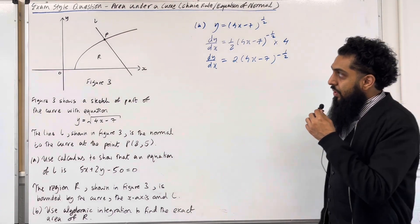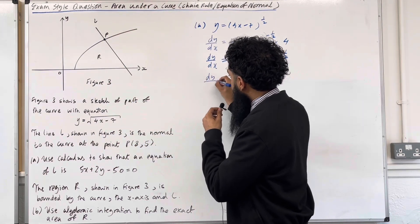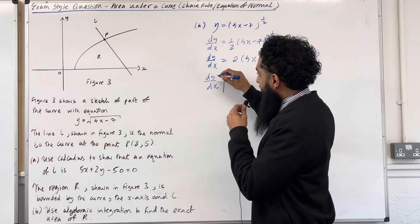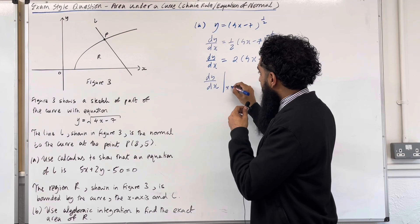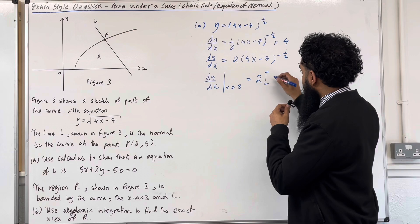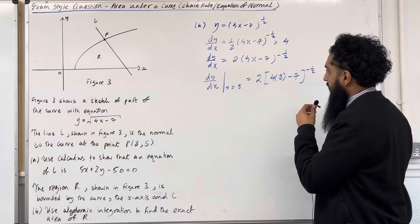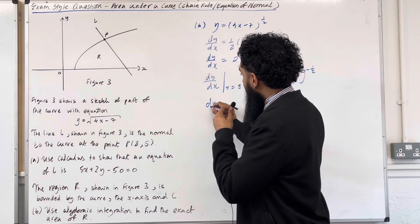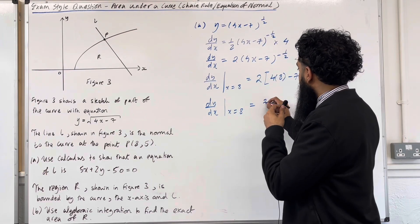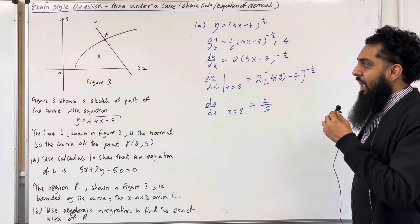To find the gradient of the tangent to the curve at point P, we substitute the x coordinate of P into the gradient function — evaluating dy over dx when x equals 8. We get 2 times (4 times 8 minus 7) to the power of minus 1 half, which gives dy over dx equal to 2 over 5. This is the gradient of the tangent to the curve at point P with x coordinate 8.